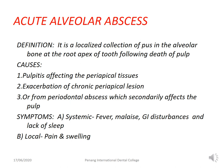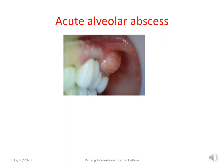The next condition is acute alveolar abscess, which is a very painful condition defined as a localized collection of pus in alveolar bone at the root apex of a tooth following death of the pulp. Causes include pulpitis affecting the periapical tissues, exacerbation of chronic periapical lesions, or a periodontal abscess that secondarily affects the pulp. Symptoms are often systemic, including fever, malaise, GI disturbances, and lack of sleep. Local symptoms are severe pain and swelling — swelling is a must.